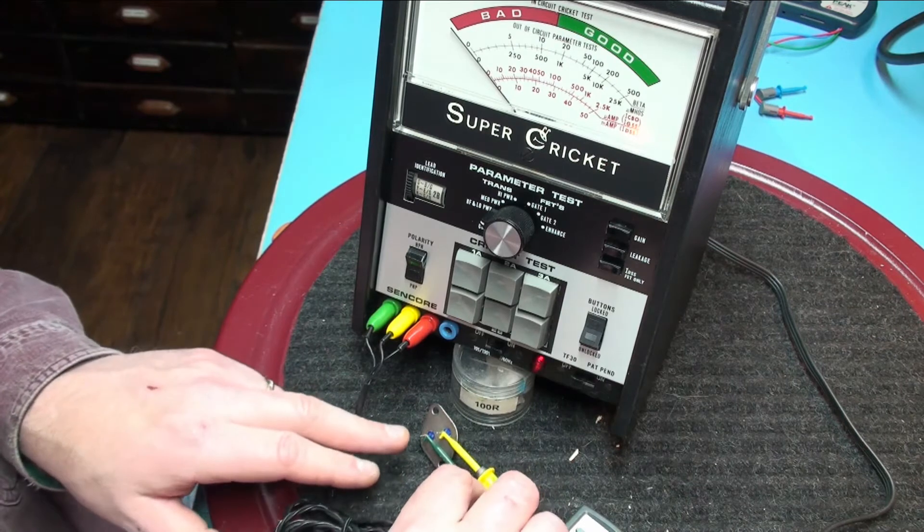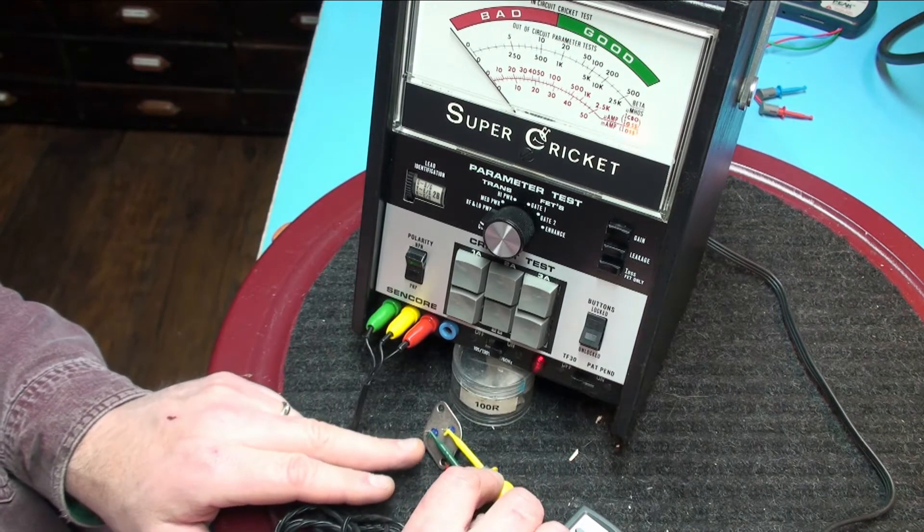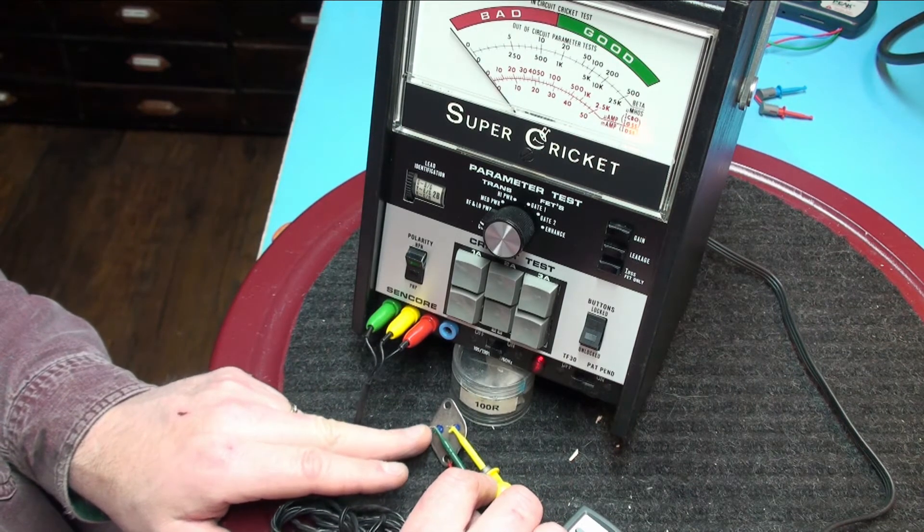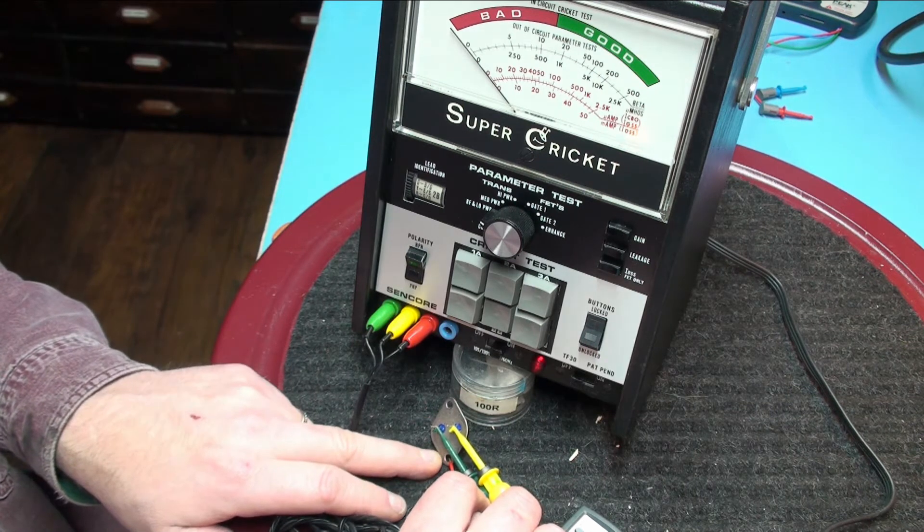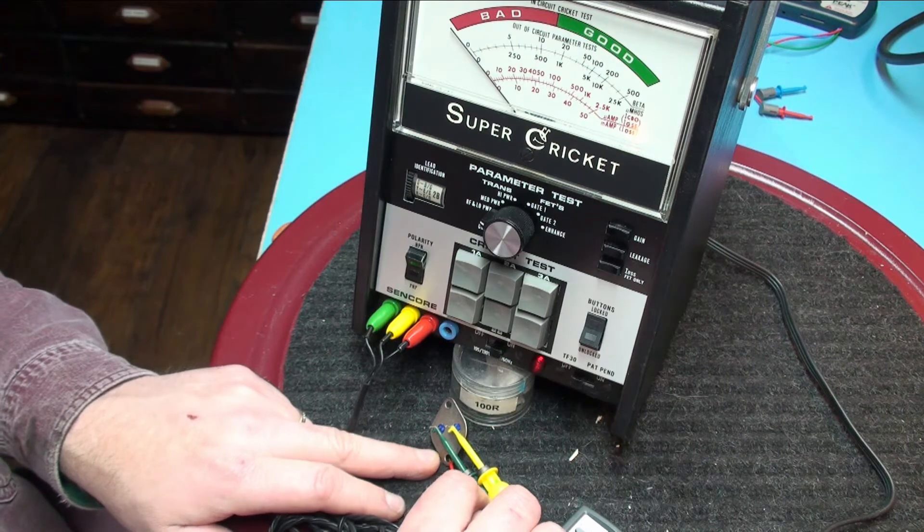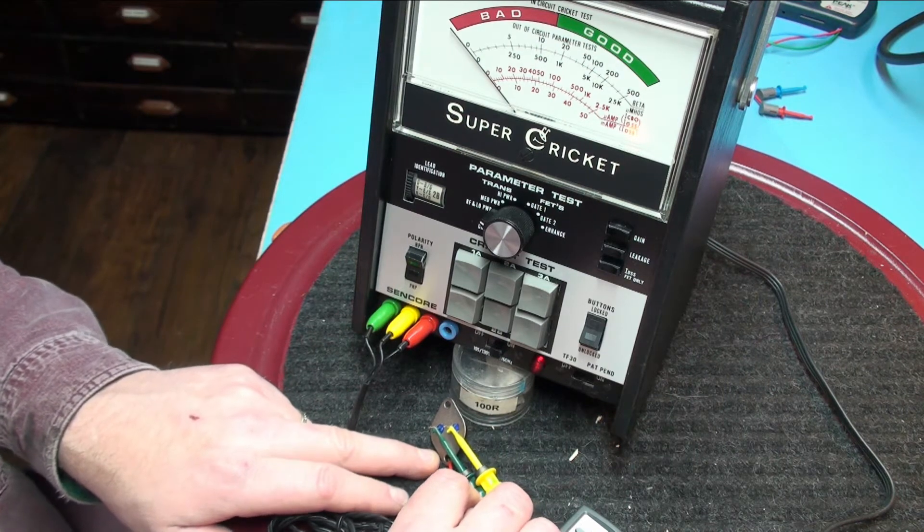If I look up this transistor sure enough the yellow is indeed the emitter. The green is the base and red is the collector.